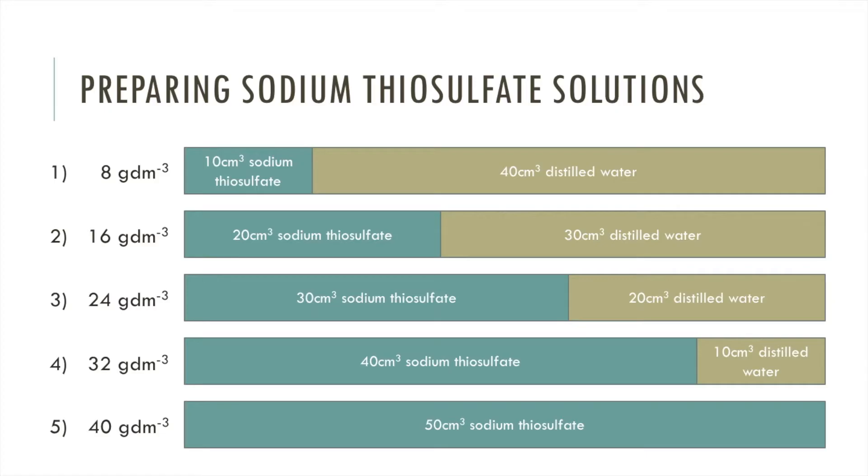All solutions have a total volume of 50 centimetres cubed, just with differing ratios of sodium thiosulfate and distilled water. The least concentrated solution has the most distilled water, and as we get more concentrated, less distilled water is added until finally the most concentrated solution has no distilled water added at all.